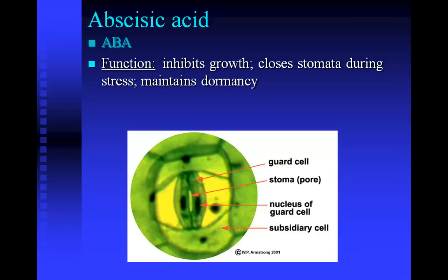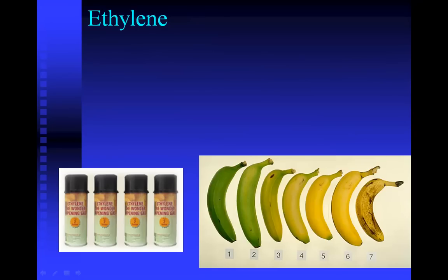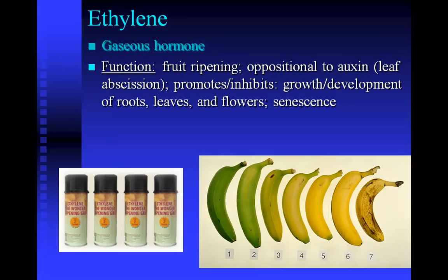The last hormone we'll talk about today is ethylene, which is particularly interesting because it's the only plant hormone you can buy in a can. Ethylene is a gaseous hormone and it controls fruit ripening. Ethylene is released by ripe fruits — which is why if you have green bananas and want them to ripen, you can put them in a brown paper bag with an already-ripe banana. That ripe banana releases ethylene and causes the others to ripen. This is important to farmers: they can pick bananas when not quite ripe so they're harder and less likely to be damaged during shipping, then spray them with ethylene at the destination so they're ripe by the time they reach grocery store shelves.